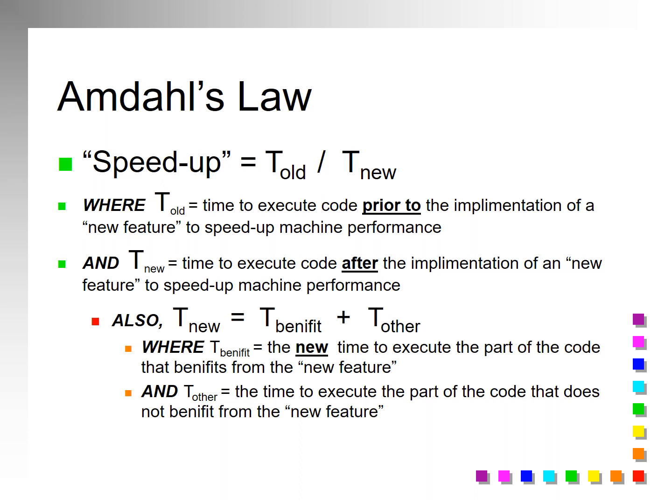T sub new is the time to execute the code after the implementation of a new speed up measure in performance. And so T new is equal to two things: the part that benefits and the part that does not.